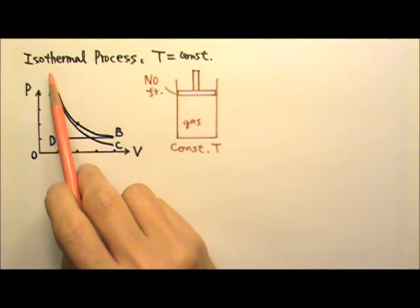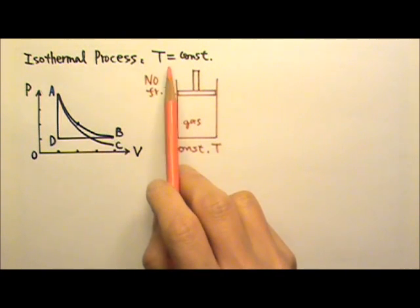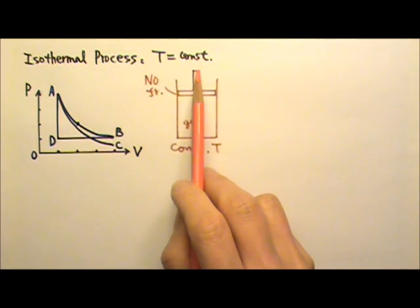By definition, an isothermal process is a process that has constant temperature throughout the entire process.